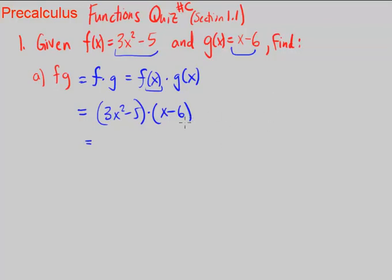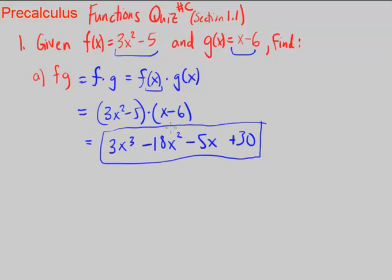We can use the box method, we can use FOIL, we can use any method you would like. And then we get 3x³ - 18x² - 5x + 30. Okay, and we combined all like terms so this is our answer in simplified form.